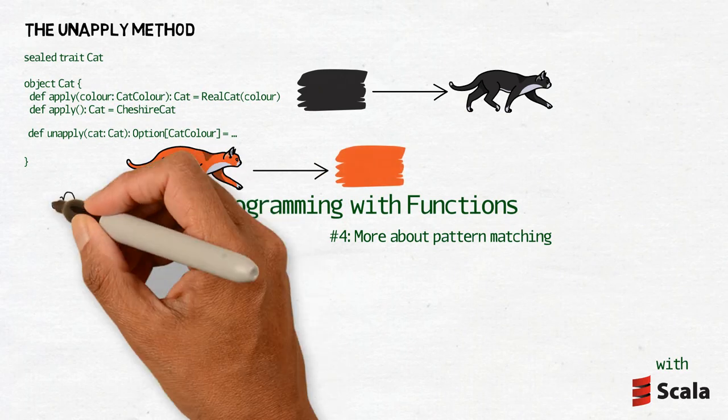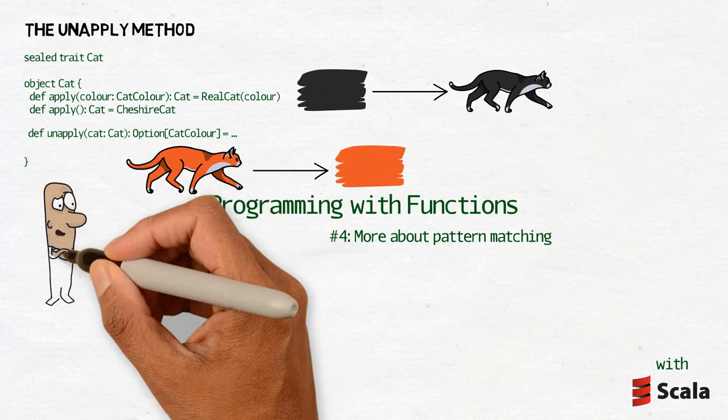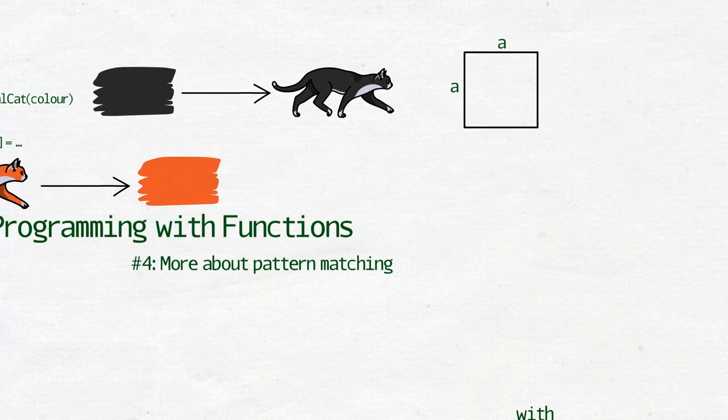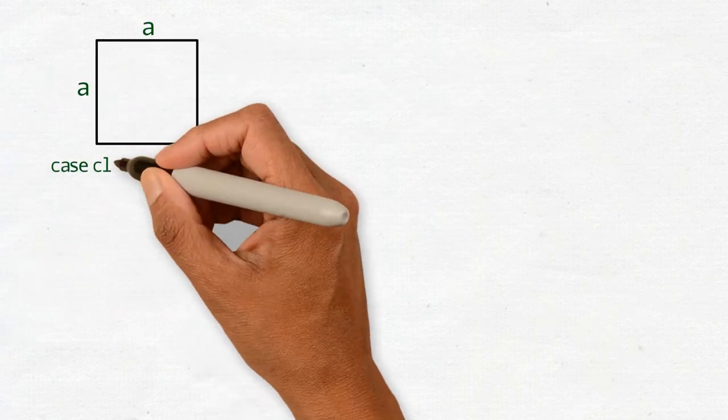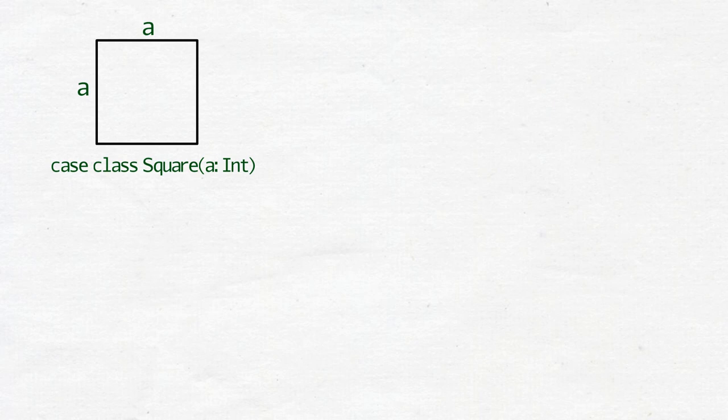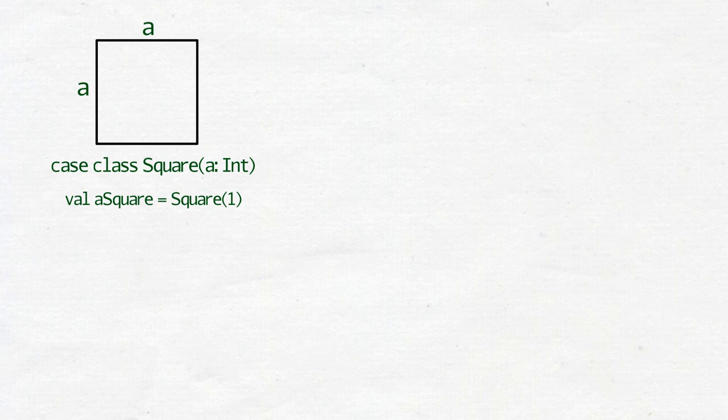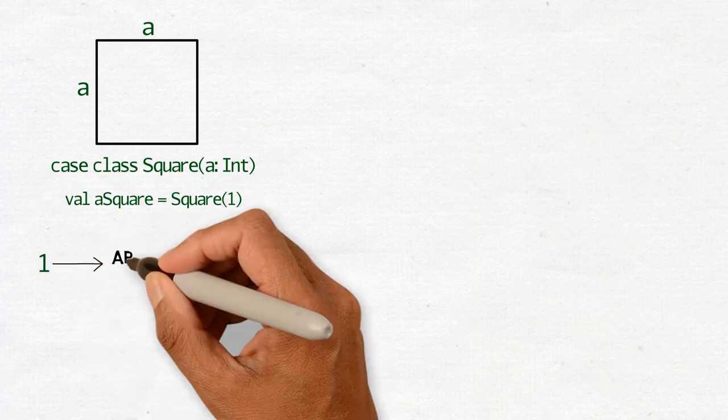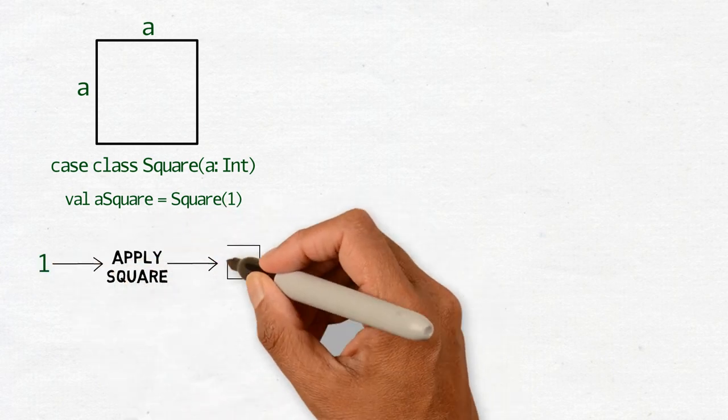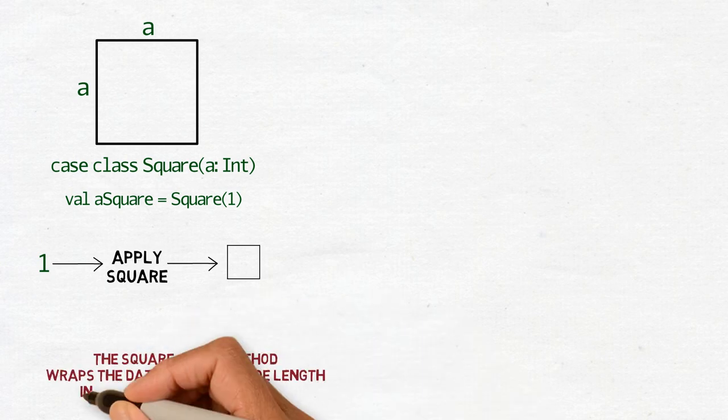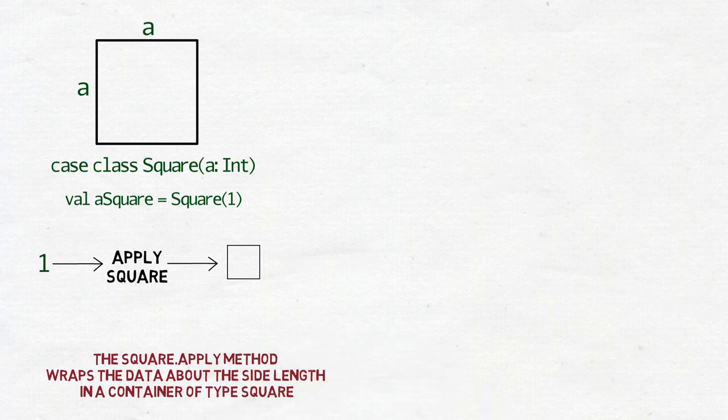Let's change the example and talk about squares instead. A square is defined by the length of its side and only that. The case class automatically implements the apply method, so we can create a new square by writing val square equals square of one. You may imagine that the square apply method wraps the data about the side length in a container of type square.